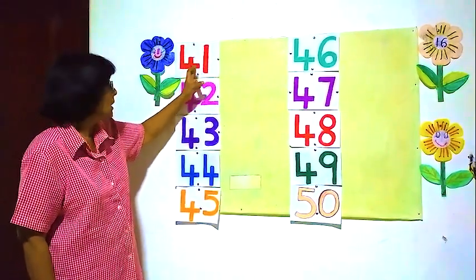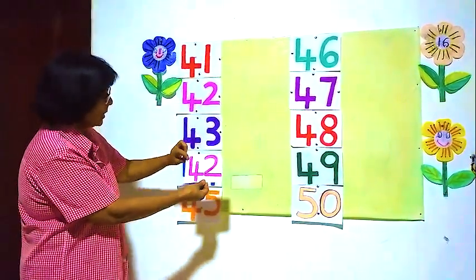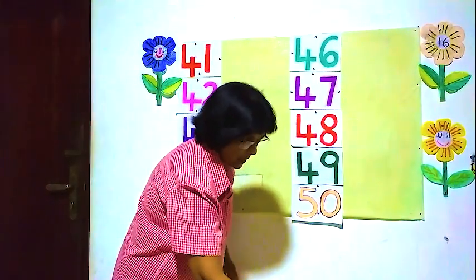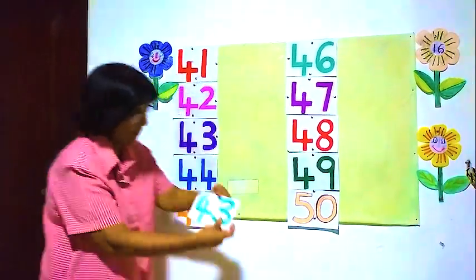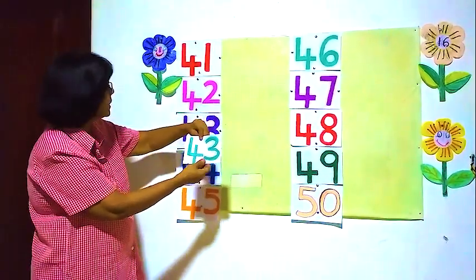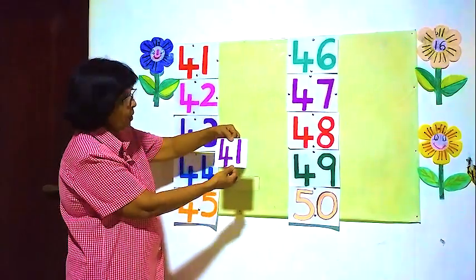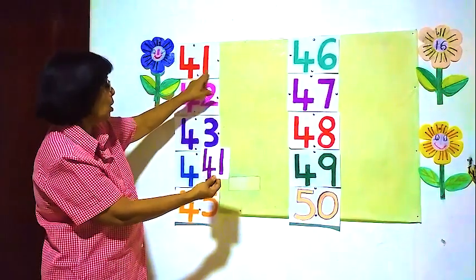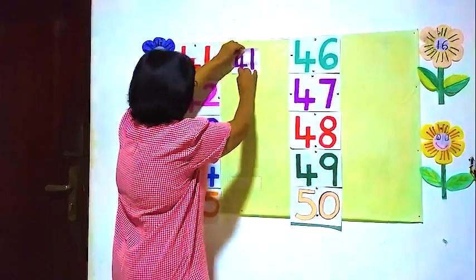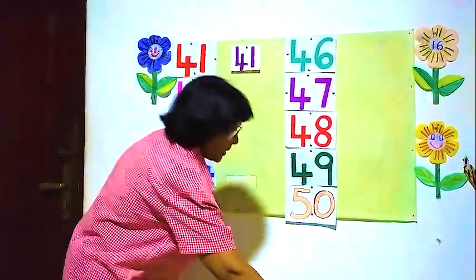41 — 4 and 1. Is this 41? Here we have 4 and 2, but we want 4 and 1, so this is wrong. Where is 41? Is this 41? Here 4 and 3 — no, this is wrong. We want 4 and 1. This is 43. We see this is correct here: 4 and 1, 41. This is correct. We are fixing it here — 41 and 41, 4 and 1.